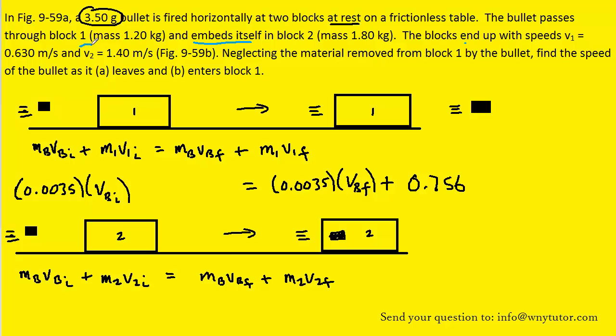So when they tell us that the final velocity of block 2 is 1.4, that also means that the final velocity of the bullet is also 1.4. So with that in mind, let's plug in the known values. Notice that the initial velocity of block 2 was 0, just as it was for block 1. Also notice that we have only one unknown, the initial velocity of the bullet.